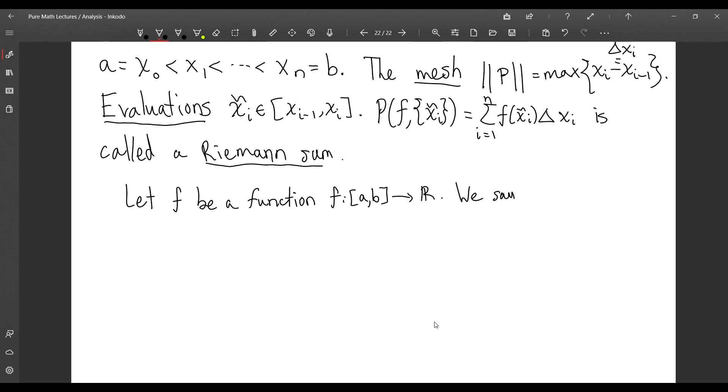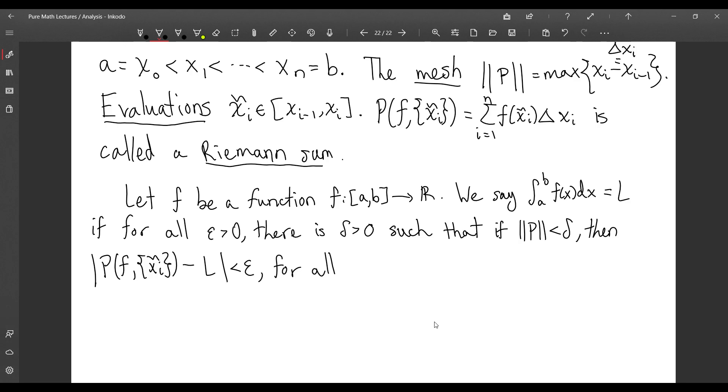We say that the Riemann integral from a to b of f(x)dx exists and equals L if for all ε > 0 there is a corresponding δ > 0 such that if P is a partition of mesh less than δ, then |P(f,{x̄ᵢ}) - L| < ε for all choices of evaluation points.